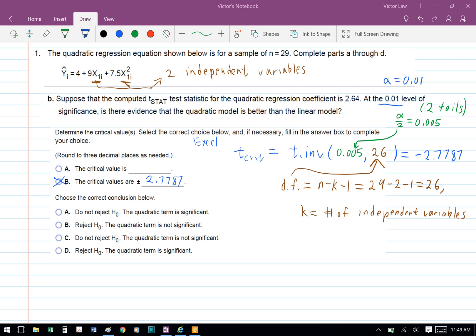And for the alpha over 2, this is the two-tail, so therefore we have to divide the alpha divided by 2.